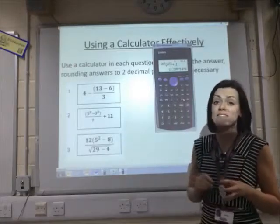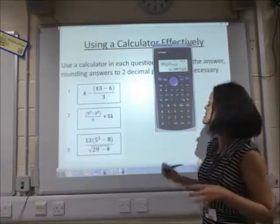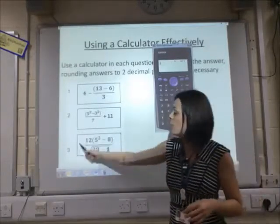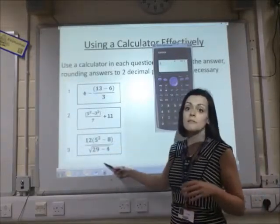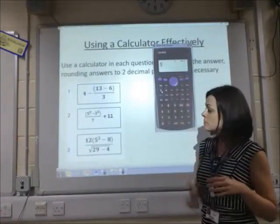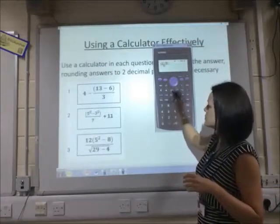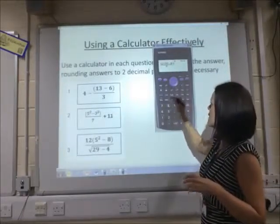Finally, this last one looks nasty, but as long as we follow these simple rules, it's going to work just the same. So, let's start again. This whole thing is part of a fraction this time, so let's press the fraction button. On the top, I've got 12 brackets, 5 squared minus 8 brackets.